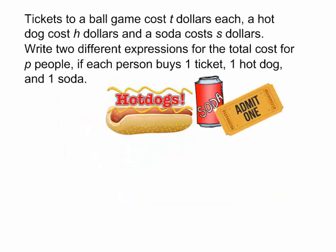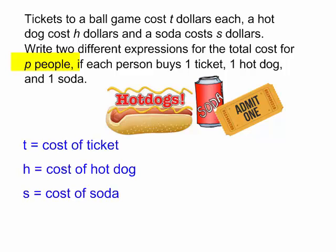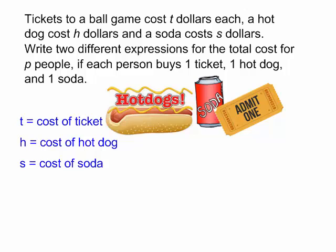Let's try one more problem. Tickets to a ball game cost $2 each. A hot dog costs $H dollars and a soda costs $S dollars. Write 2 different expressions for the total cost for P people if each person buys 1 ticket, 1 hot dog, and 1 soda. We don't know how many people are going to this game — P people. So T is equal to the cost of a ticket, H is equal to the cost of a hot dog, and S is equal to the cost of a soda.